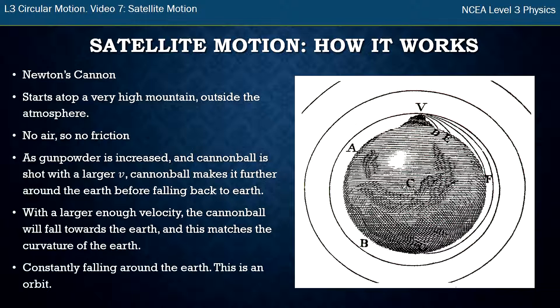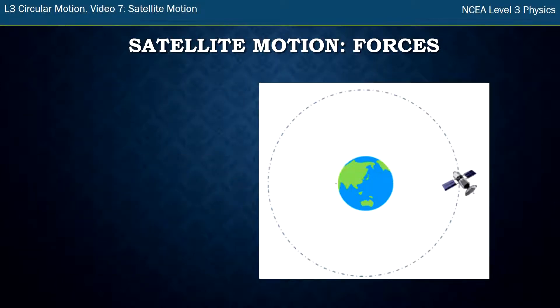And there we have an orbit. This is what an orbit is. It's something with enough velocity that the Earth's gravity pulls it back towards it, but it's just constantly falling around the Earth. And this is what our satellites are.